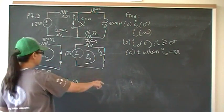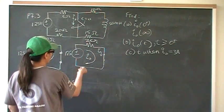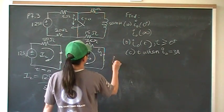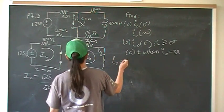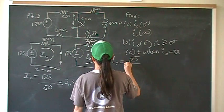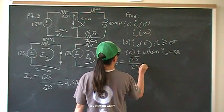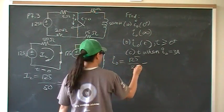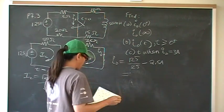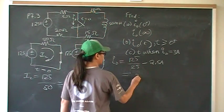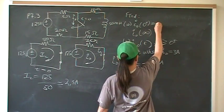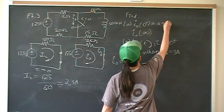And I0, I0 is going to be this long term. So it's going to be, I0 is going to be this current right here, which is 125 over 25. And we have this subtract the inductor current. And that should give you 2.5 amps. So right after the switching happens, we have 2.5 amps.